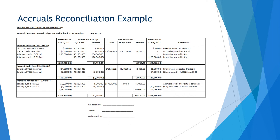Similar to the prepayments reconciliations, accruals reconciliations should include amounts expensed or adjusted to the P&L, details of any payments made, opening and closing balances, and of course, a detailed description of the timing of when the balance will be exhausted. You will notice that the sections titled Expense to P&L and Invoice Details have been flipped for accruals reconciliations compared to prepayments reconciliations, to reflect the timing of the entries to and from these accounts.